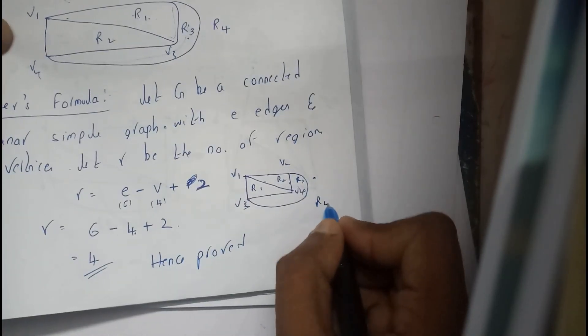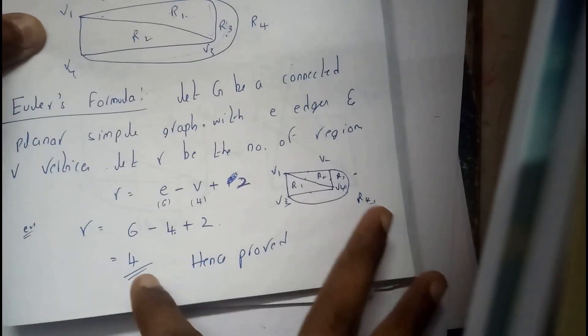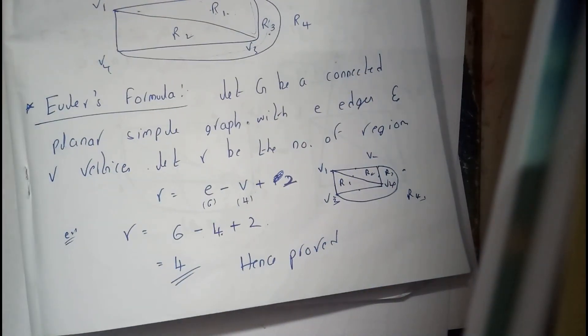R3, and exterior part R4 - four regions. Hence both are matching, so this is Euler's formula. Thanks for watching.